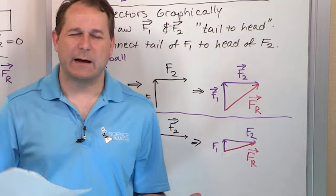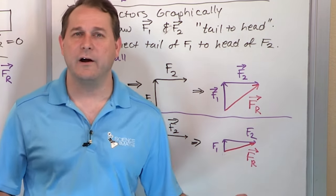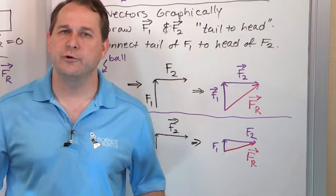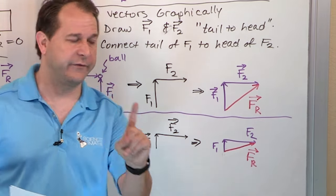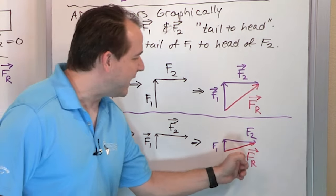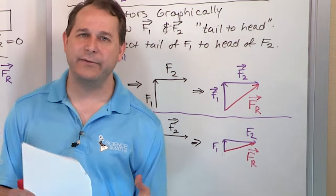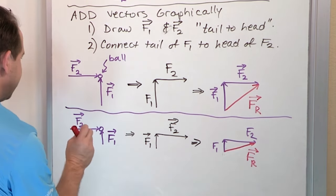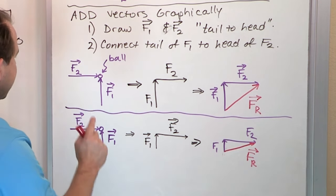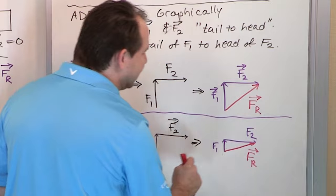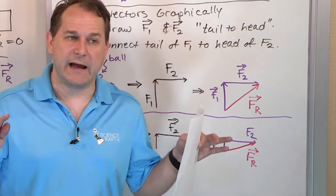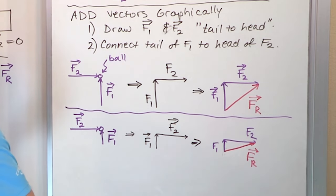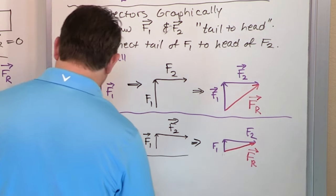So if we have a ball with two forces, it's really a pain to deal with both forces separately. What you do is add the forces together to find one resultant force. Instead of solving the problem with two forces, you just find this one force and deal with it. This ball is going to behave the same if you have two forces acting on it like this, or if you have one single equivalent force acting on it.